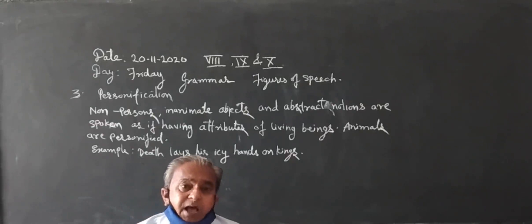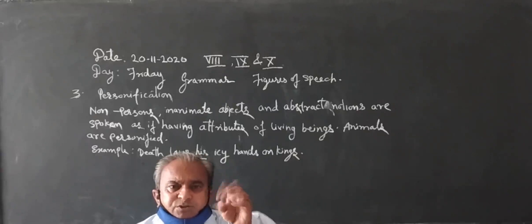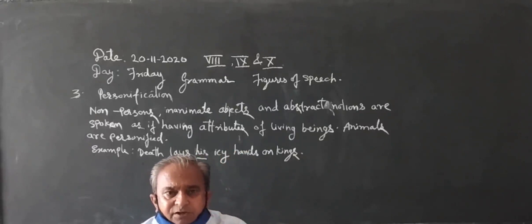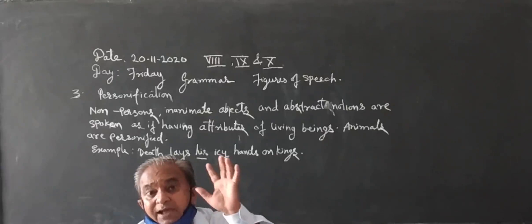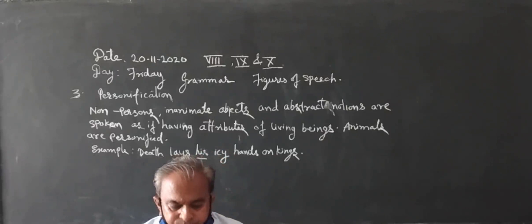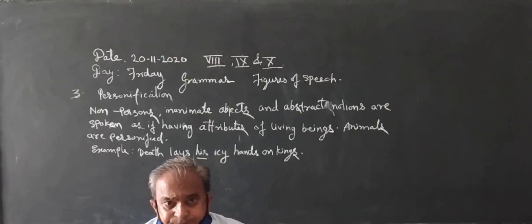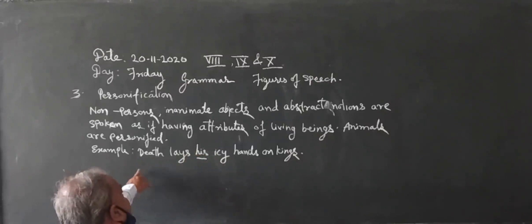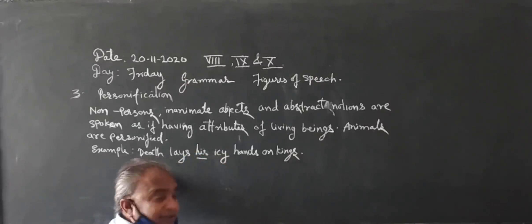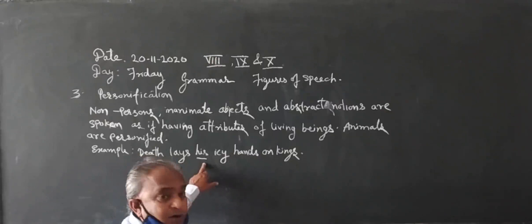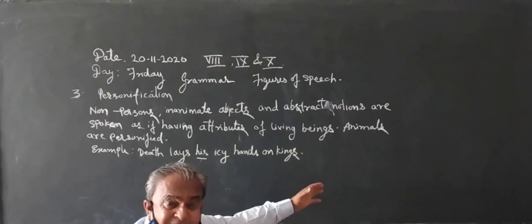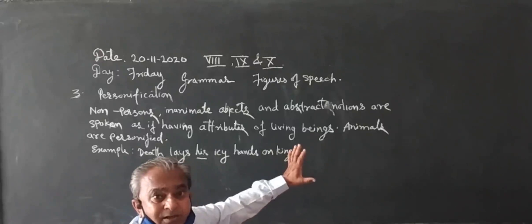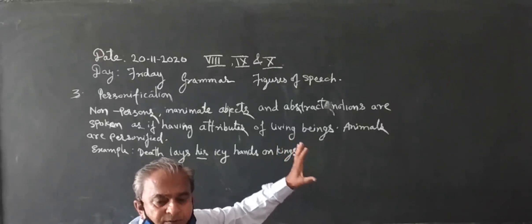Today we are going to learn about personification figure of speech. What is personification figure of speech? Personification figure of speech is when a lifeless object or an abstract notion is treated as a living thing. For example, 'Death lays his icy heads on kings.' Death is a lifeless thing, but the pronoun 'his' is used — it has come in masculine gender. So this sentence comes under personification figure of speech.